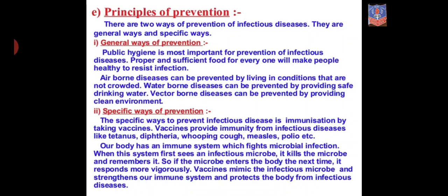The second category is specific ways of prevention. The specific way to prevent infectious diseases is immunization by taking vaccines. Vaccines are given for diseases like hepatitis and polio.